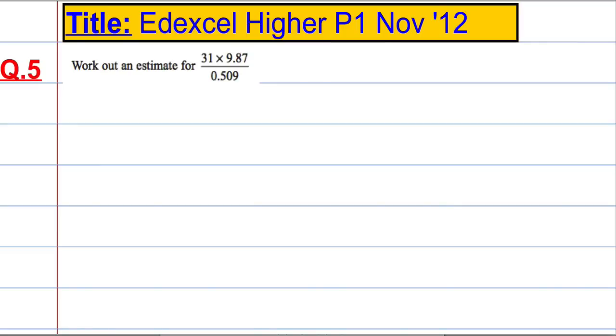Right, so question 5 is to work out an estimate for 31 times 9.87 over 0.509. When we see questions like this, this type of estimate, what we want to do is round each number to one significant figure.